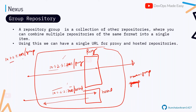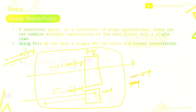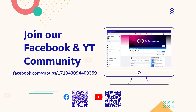Using that single group URL, if someone wants to reach outside they use the same URL, and if someone wants to store artifacts locally in the hosted repository, they also use the same URL. We are just giving a single endpoint to them — that's the key benefit.